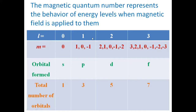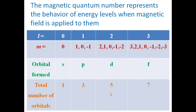If L is equal to 2, the azimuthal quantum number is 2, then the value of the magnetic quantum number will be 2, 1, 0, minus 1, and minus 2. The orbital form is the D-orbital and the total number of orbitals is 5.